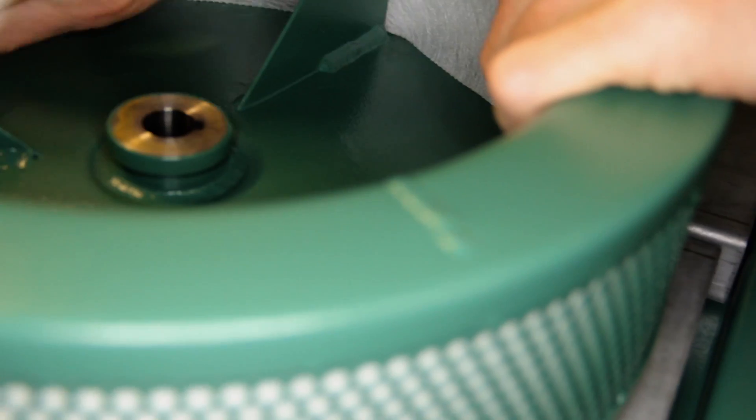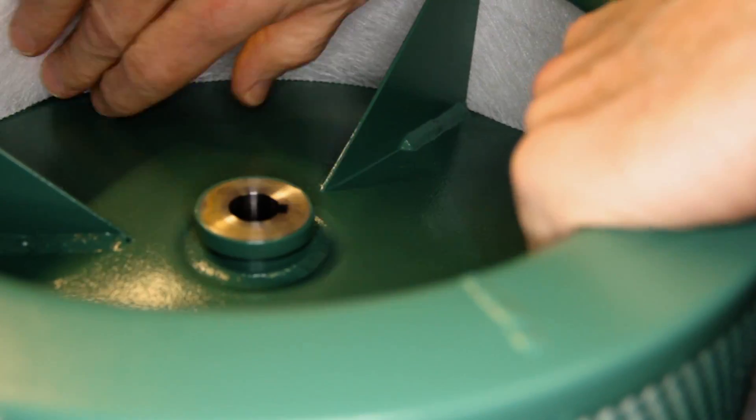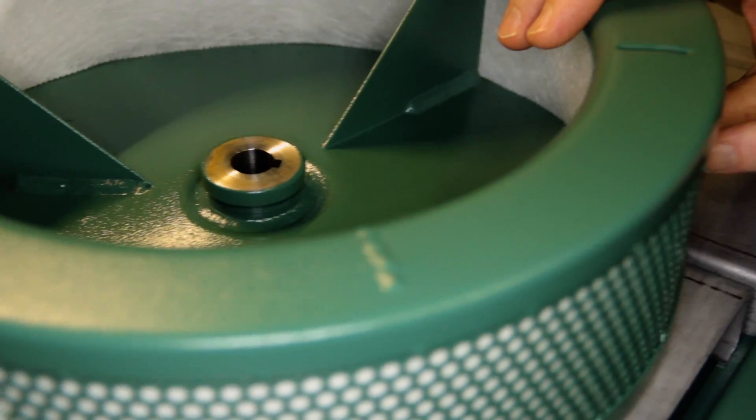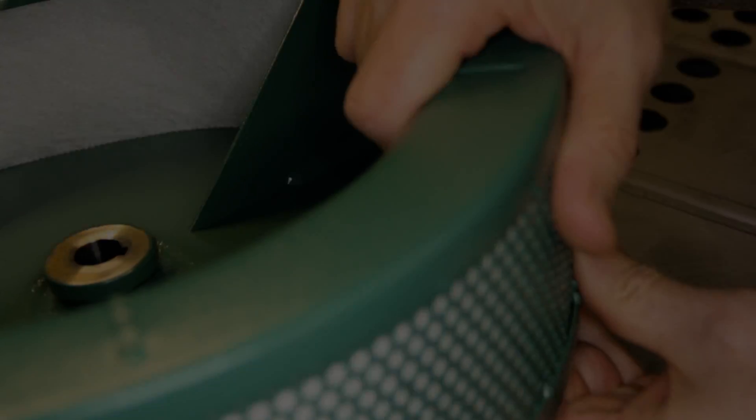The best way to schedule maintenance is to track the unit run time and record it, so that you have a record of when to change your filters. This will help prevent the unit from going out of balance and damaging the motor.